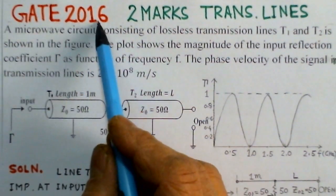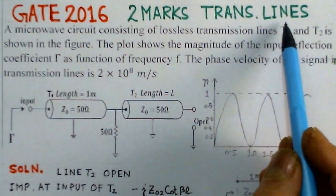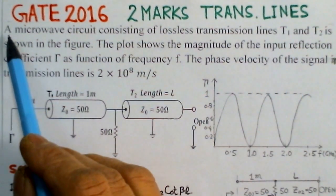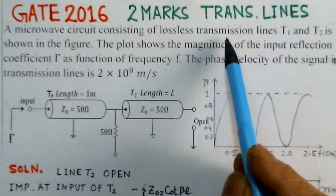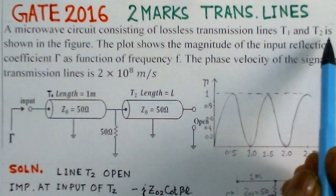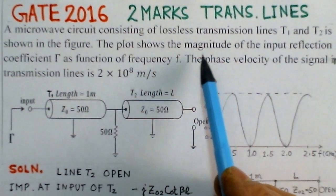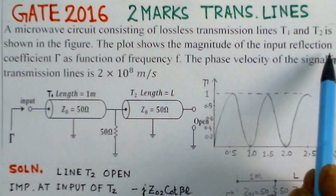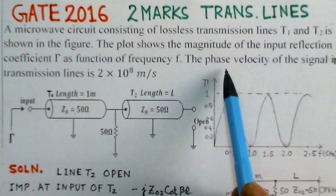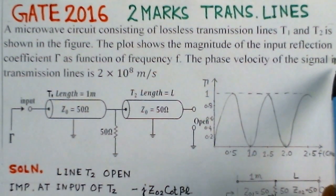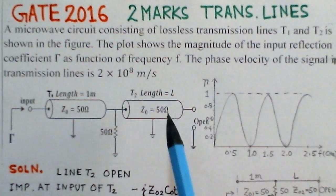This problem is of two marks and it is on transmission lines. A micro circuit consisting of lossless transmission lines T1 and T2 is shown in the figure. The plot shows the magnitude of the input reflection coefficient gamma as a function of frequency f. The phase velocity of the signal in the transmission line is 2.8 times 10 to the power 8 meters per second.